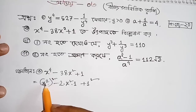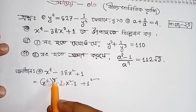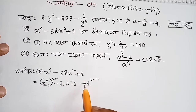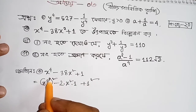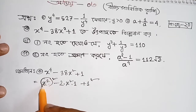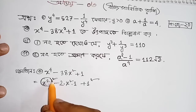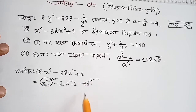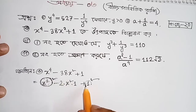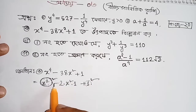x to the power 4 is equal to x square whole square. Using the identity: a equals a and a equals b, so we have a square plus b square.